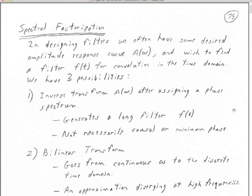If you can understand how to design a Butterworth filter — and lab number three has some Butterworth filter questions — I'd be quite happy if the first half of the class leads you to this understanding. The way the Butterworth filter gets designed is a process called spectral factorization: taking a desired amplitude response spectrum — some amplitude response for the filter versus frequency omega — and finding a convolutional filter time series f of t that fits our needs.